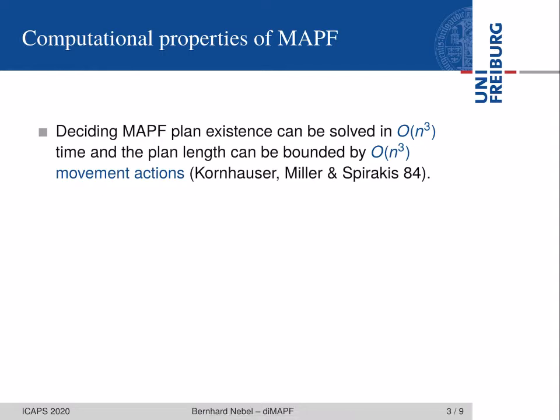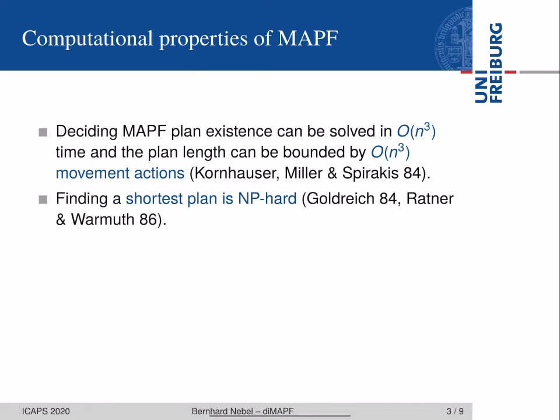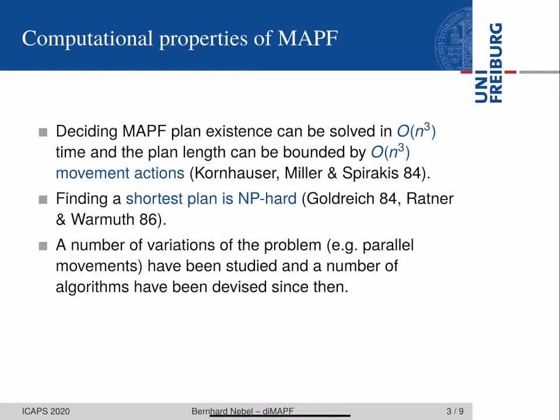In general, it is well known that deciding the existence of such a plan for the multi-agent pathfinding problem can be solved in cubic time, and the plans have a length that can be bounded by a number that is also cubic in the number of vertices. That has been known since 1984. In the same year, people already found out that when you want to find a shortest plan, this is an NP-hard problem. A number of variations of this problem — particularly where you deal with parallel movements — have been studied, and a number of algorithms have been devised since then.